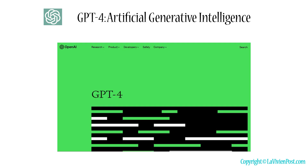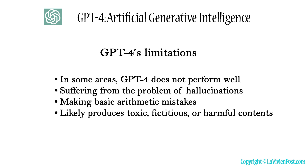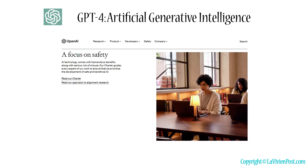GPT-4 is considered as an early version of an artificial general intelligence system. Overall, GPT-4 still has many limitations. In some areas, GPT-4 does not perform well. In particular, it suffers from the problem of hallucinations or making basic arithmetic mistakes. Like other large language models, it is also likely to produce toxic, fictitious, or harmful content. It requires effective and efficient control approaches to eliminate the potential risk of the use of LLMs.